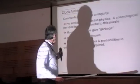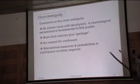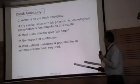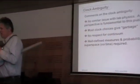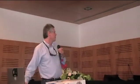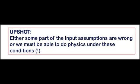A couple of big comments about the clock ambiguity. There's no similar issues in laboratory physics for reasons we can discuss. This is really a cosmological issue. There are certain assumptions that go into this which I won't emphasize in my brief amount of time. But either the option is either there's something wrong about the assumptions that went into getting this result, or we actually must be able to do physics under these conditions. These are very normal assumptions in doing quantum cosmology.